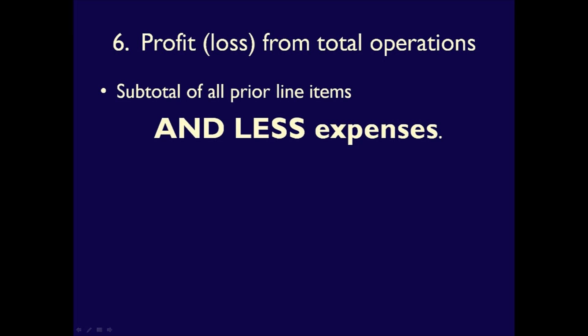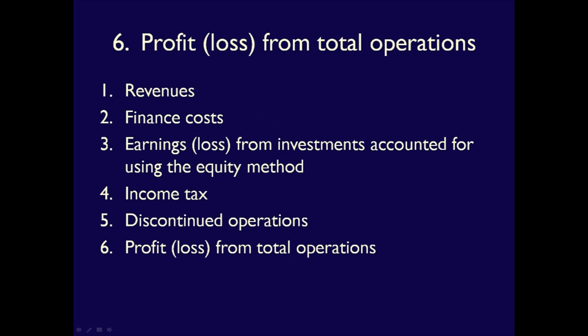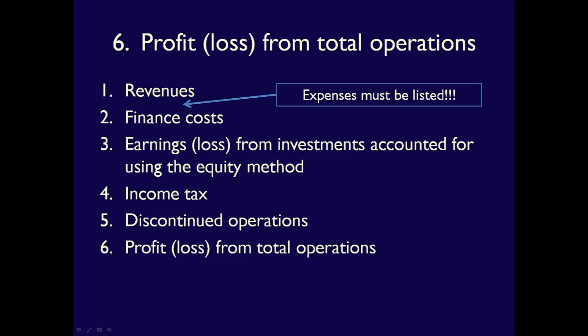Item six is profit or loss from total operations, covering all the lines already discussed plus expenses. Notice that in our listing there is no required line item for expenses such as cost of goods sold, depreciation expense, or utilities expense — we have financing costs and income taxes, but nothing else officially required. However, since we need a line item called profit or loss from total operations, there must be a line for expenses on the statement. Line item six is therefore a total of all prior line items and expenses, which must also be deducted.